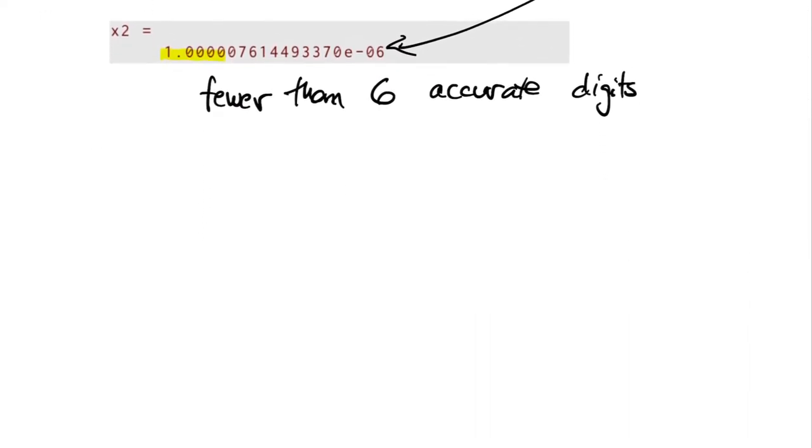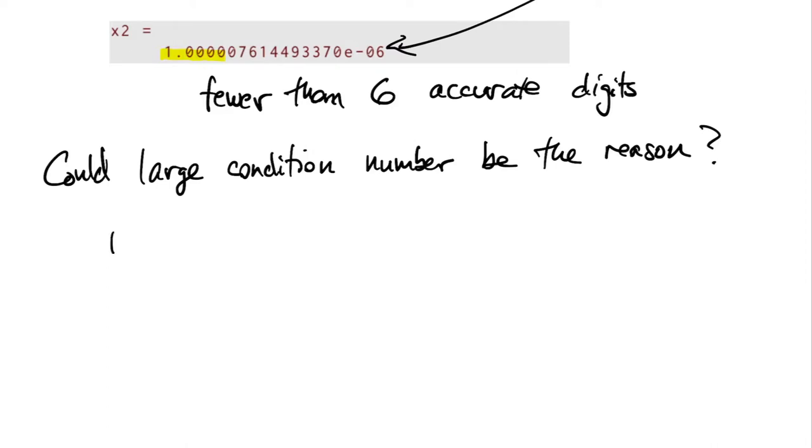Whenever we see a large change in the answer due to small errors, we ought to ask: could this be due to a large condition number? Well, last time we worked out what this condition number is, and the denominator has the difference between the two roots. These two roots are very well separated, and so in fact, kappa is very small. Conditioning of the original problem isn't the issue. It has something to do with our algorithm.